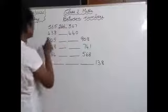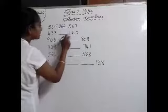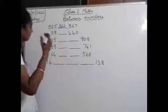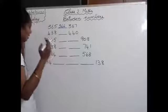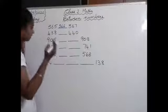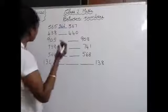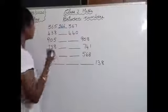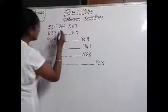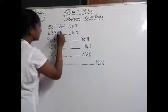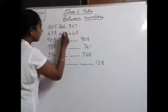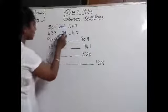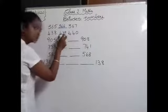Next: 438 blank 440. Start saying numbers from 431: 431, 432, 433, 434, 435, 436, 437, 438, 439, and 440. So in between these numbers, the answer will be 439.